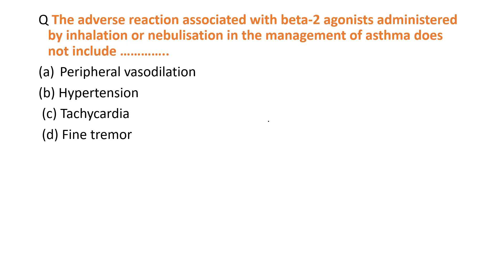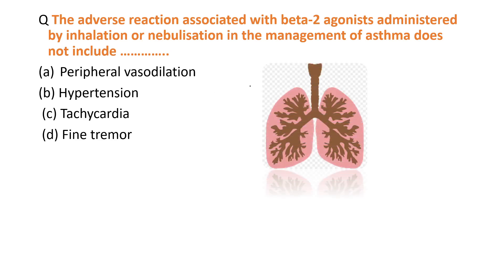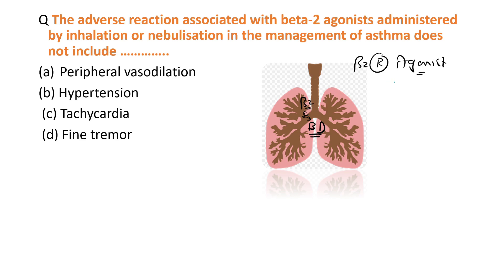In asthma patients we use beta-2 receptor agonists because in our bronchus there is a presence of beta-2 receptors. Stimulating beta-2 receptors causes bronchodilation. That's why we give drugs like salbutamol and formoterol to patients of asthma.